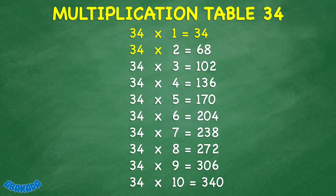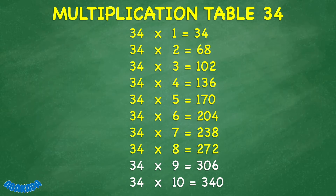34 times 2 equals 68. 34 times 3 equals 102. 34 times 4 equals 136. 34 times 5 equals 170. 34 times 6 equals 204. 34 times 7 equals 238. 34 times 8 equals 272.